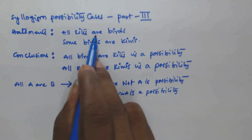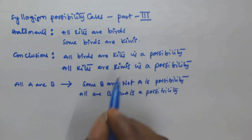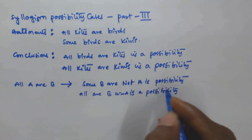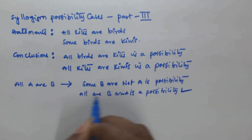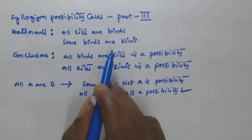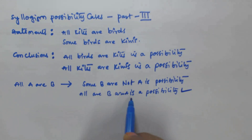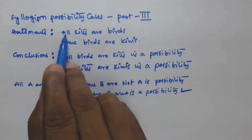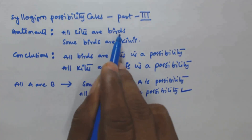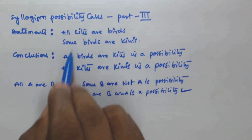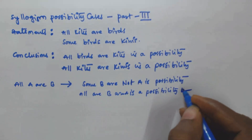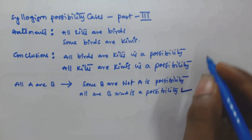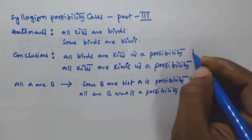From 'all kites are birds', we use the rule that 'all B are A is a possibility'. So we can say 'all birds are kites is a possibility'. Therefore, the first conclusion is true.